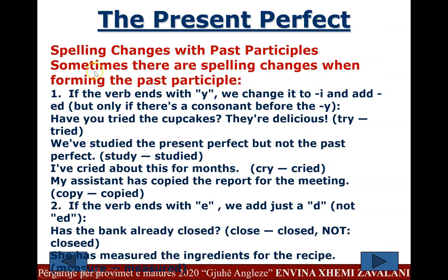Spelling changes with past participles: if the verb ends with Y, change Y to I and add -ED, but only if there is a consonant before the Y. For example: 'Have you tried the cupcake?' — try → tried. 'We have studied the present perfect.' — study → studied. 'I've cried about this for months.' — cry → cried. 'My assistant has copied the report.' — copy → copied.